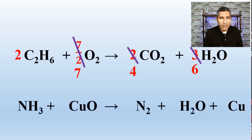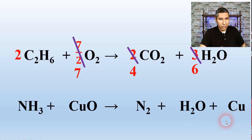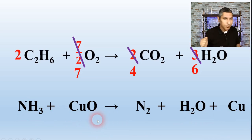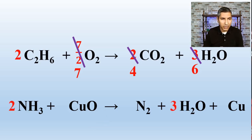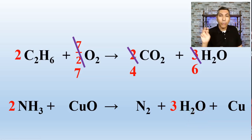Let's balance one more equation. Here we have NH3 — ammonia — reacting with copper oxide to produce nitrogen gas, water, and copper metal. Starting with the hydrogens, I see that three-versus-two split again, so I multiply the left by 2 and the right by 3 to get 6 hydrogens on both sides. Now for the oxygens: 1 on the left and 3 on the right, so I multiply CuO on the left by 3.